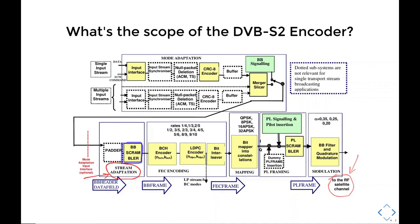The current scope includes baseband scrambler, FEC encoding, bit mapping, physical layer framing, and modulation. As of the time of this presentation, there is no padder and no physical layer signaling and pilot insertion, but we do plan to include those as well.